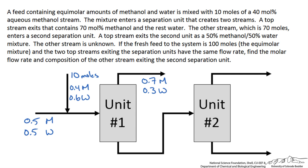The other stream, which is 70 moles, leaves unit 1 and enters a second separation unit. A top stream exits the second unit as a 50% methanol and 50% water mixture, so 0.5 methanol and 0.5 water. The other stream is unknown. The fresh feed of the system is 100 moles, and the two top streams exiting the separation units have the same flow rate. We want to find the molar flow rate and composition of the other stream exiting the second separation unit.